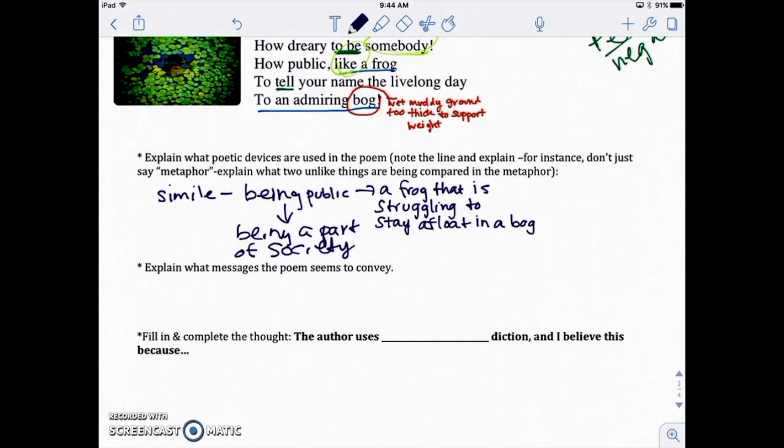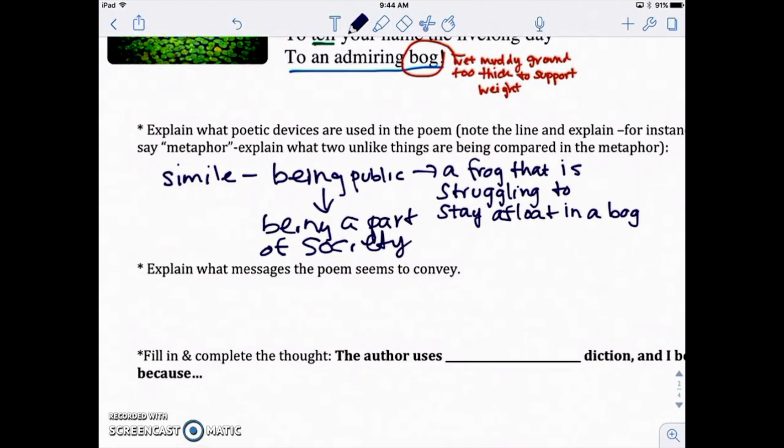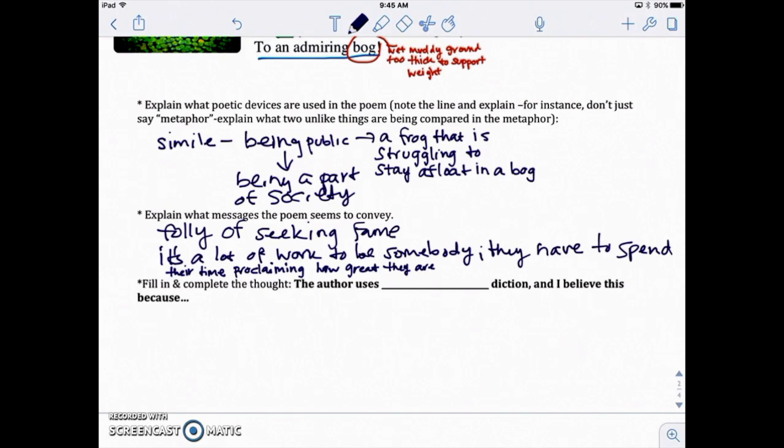So now when it says, explain what messages the poem seemed to convey. Well, we kind of just did that. We've got a couple of things we can say, we could say the folly, that's a word you might not know, but the pointlessness of seeking fame. And then maybe we can add this, that it's a lot of work to be somebody. And I added this as well, that they have to spend their time proclaiming how great they are, right. It's tiring to be somebody to participate in society because you constantly have to try and prove yourself. Okay. The last part says, fill in and complete the thought. The author uses blank diction. And I believe this because, okay. So diction has to do with word choice.